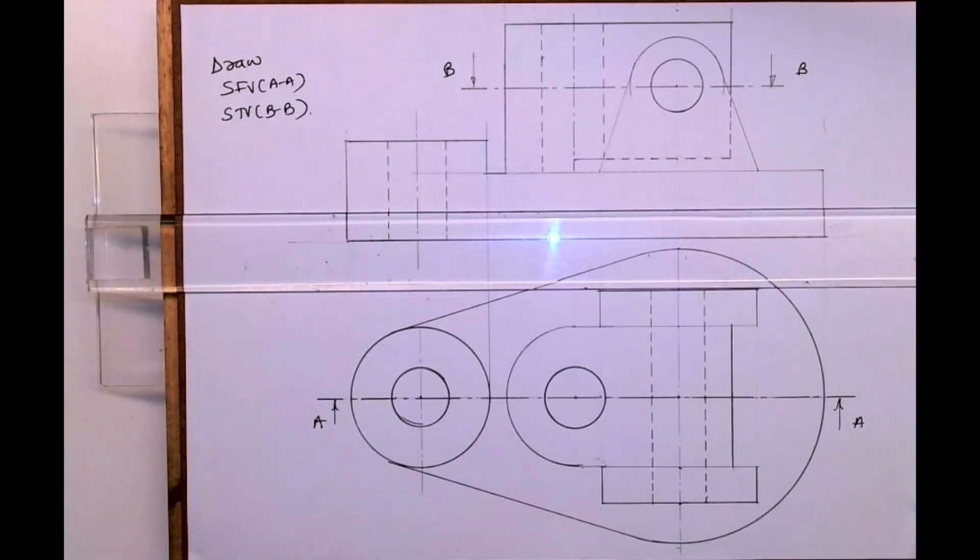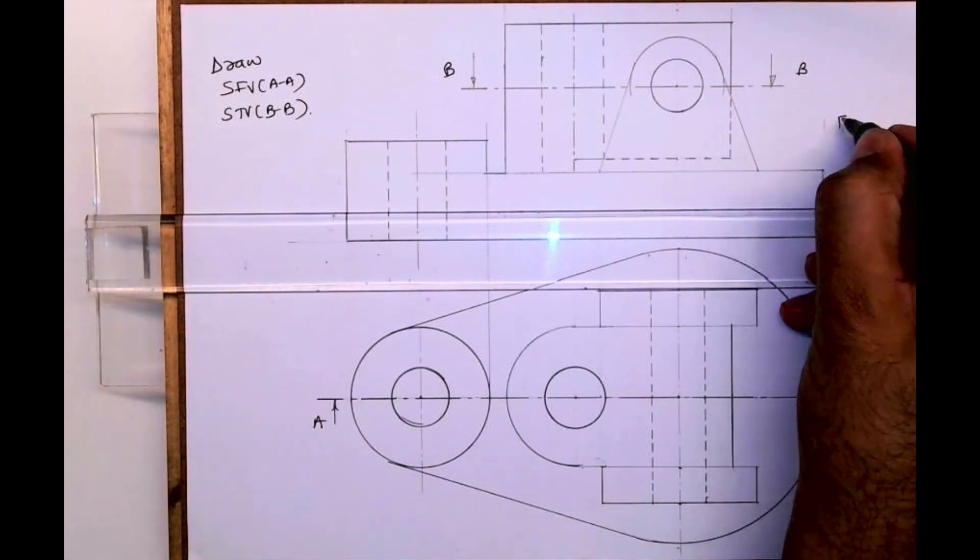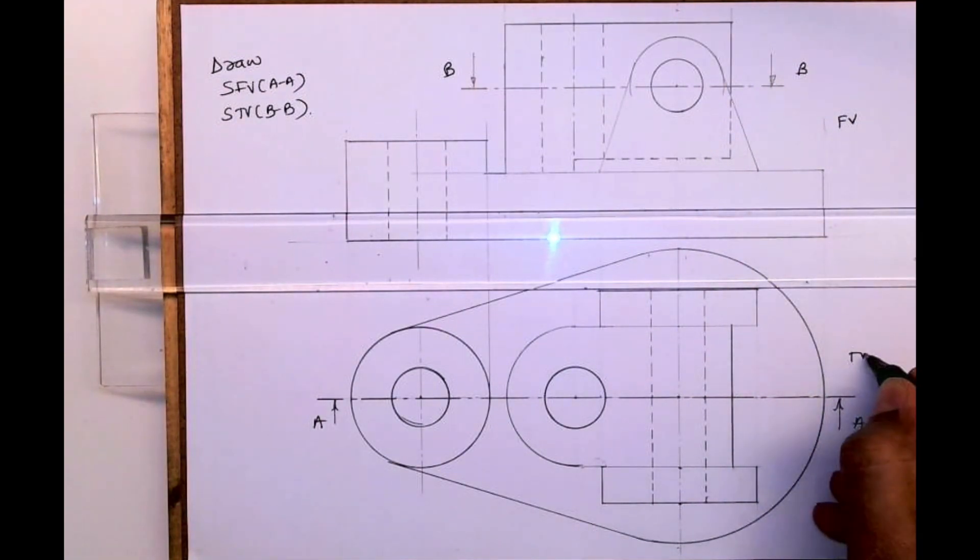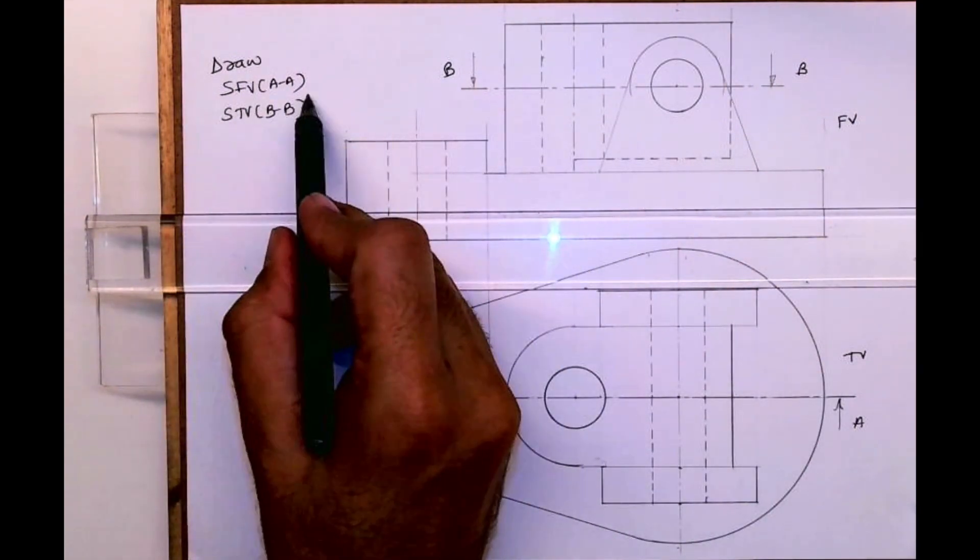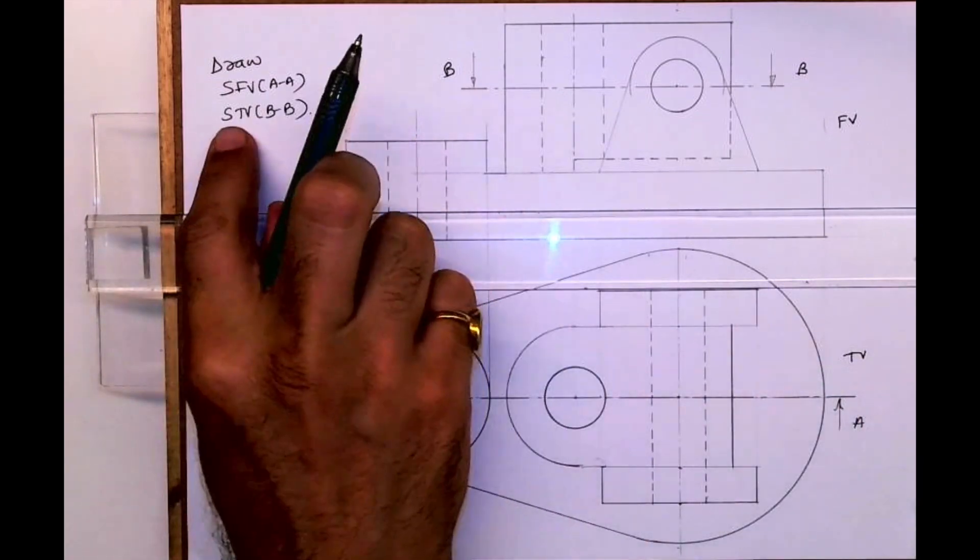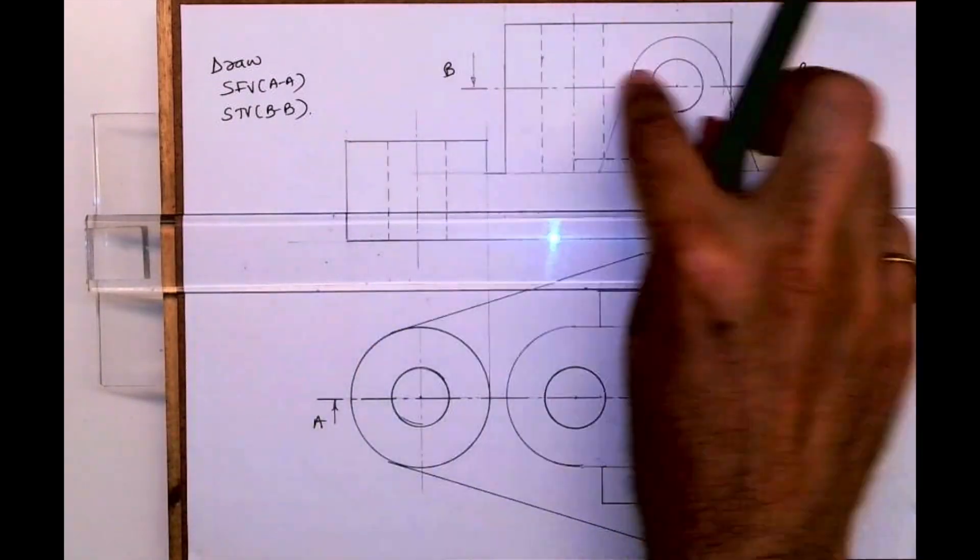Welcome to technical drawing. Today we'll see how to draw sectional front view along AA and sectional top view along BB. In this sample, the front view top is given, sectional front view along AA, and sectional top view along BB.